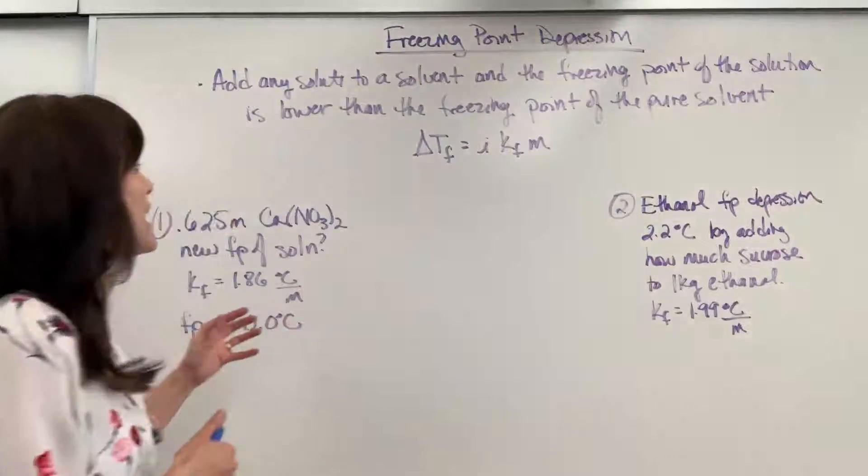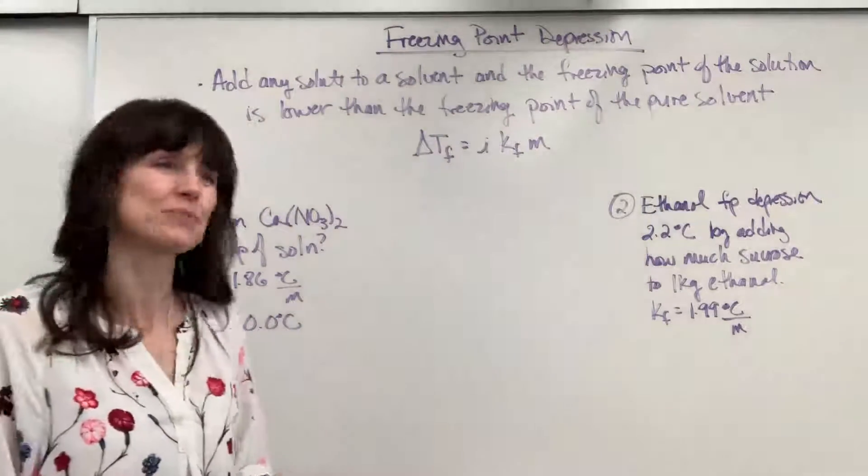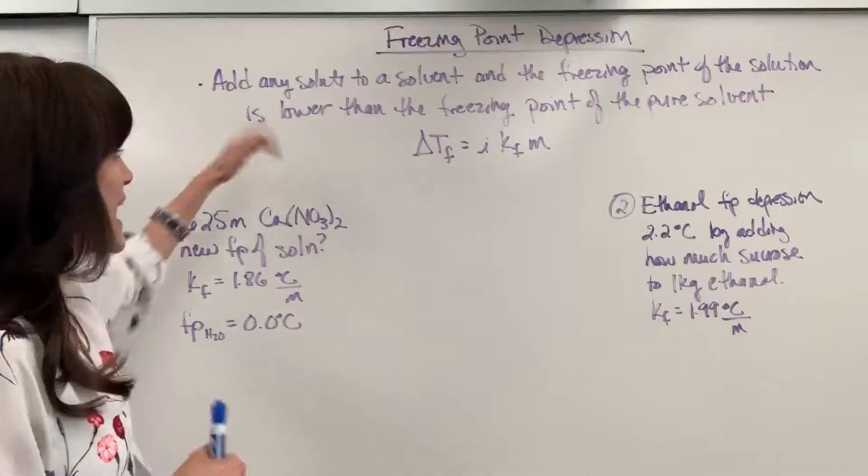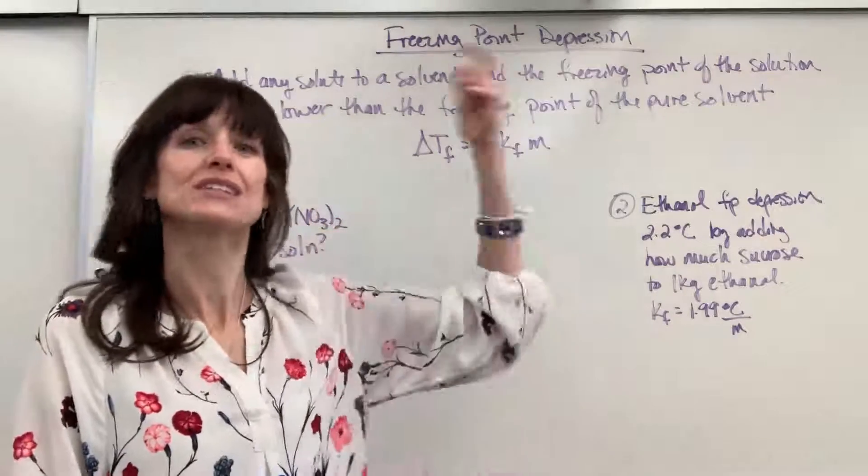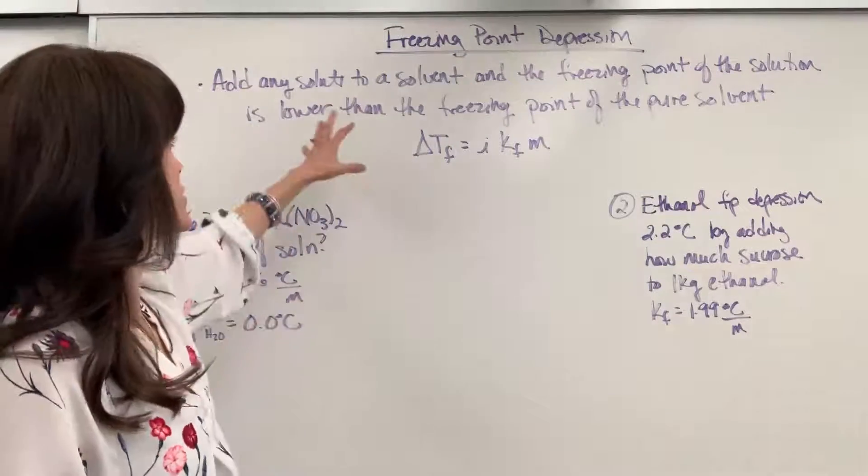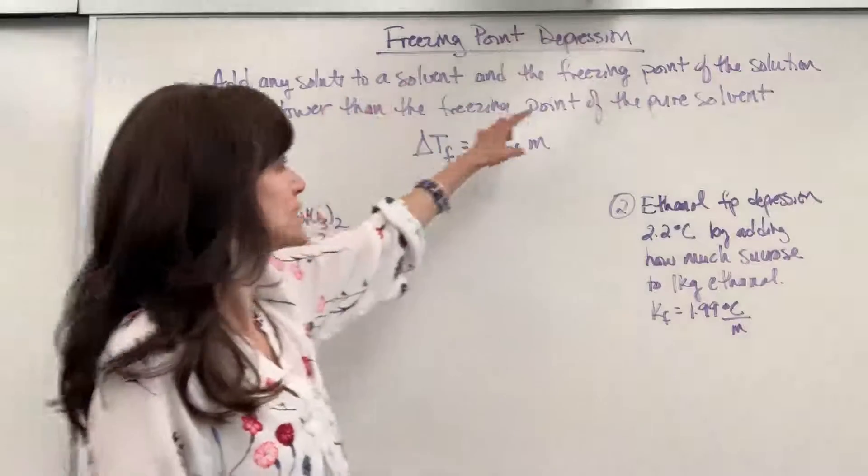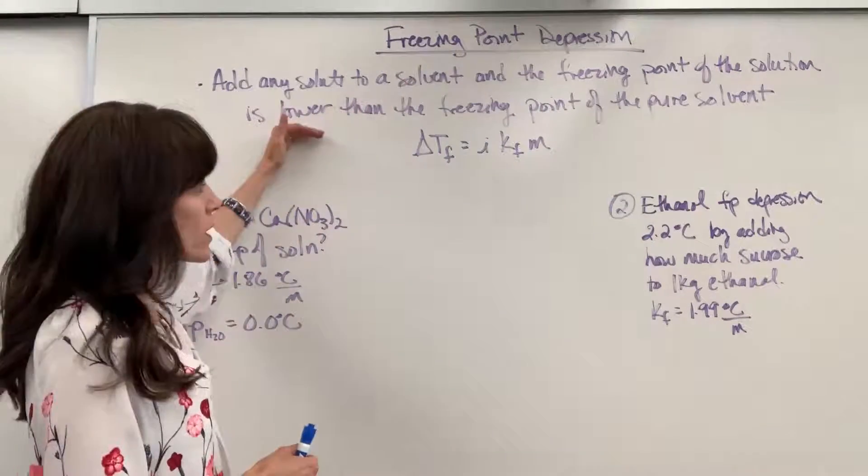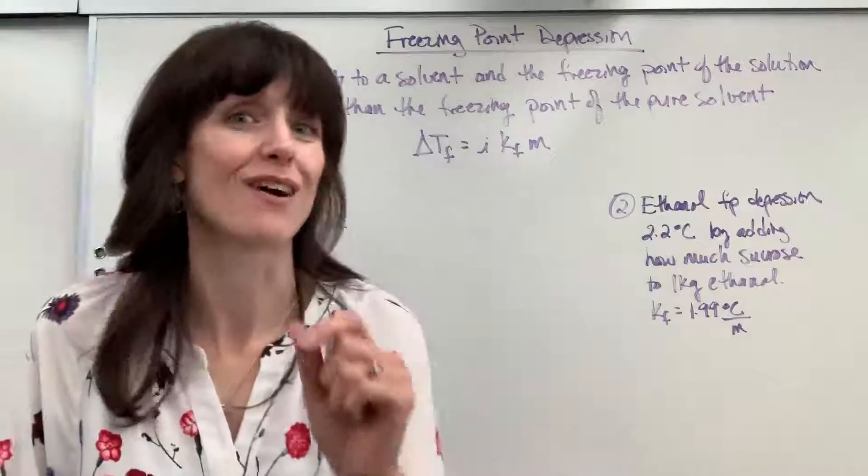So let's go ahead and look at our formula for freezing point depression. If we add any solute to a solvent, it is going to decrease the freezing point. So add any solute to a solvent, the freezing point of that solution will always be lower than the freezing point of the pure solvent.